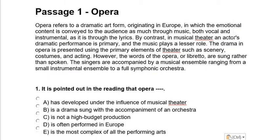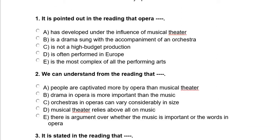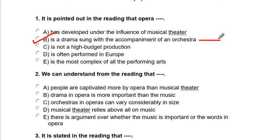After finishing reading the passage, you go to the questions given below. The first question is: 'It is pointed out in the reading that opera...' Option A: has developed under the influence of musical theater — not true. Option B: is a drama sung with the accompaniment of an orchestra — yes, this is true. So option B is the correct one.